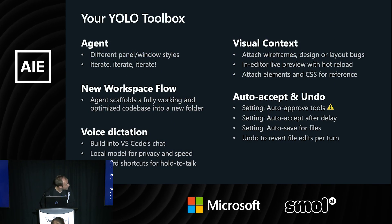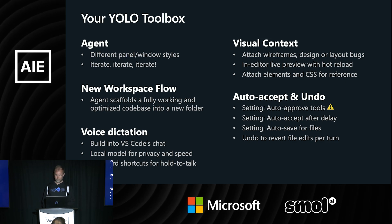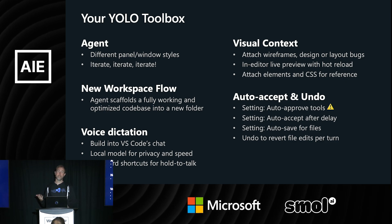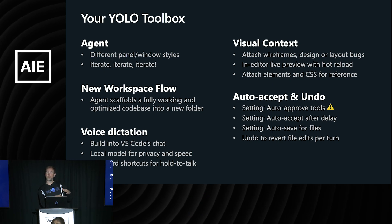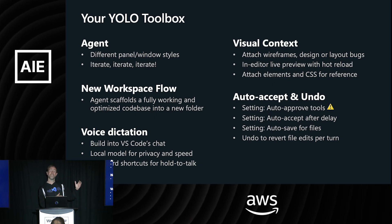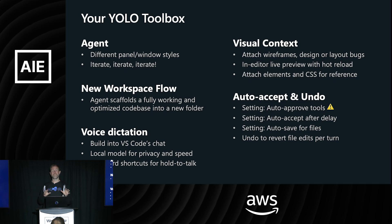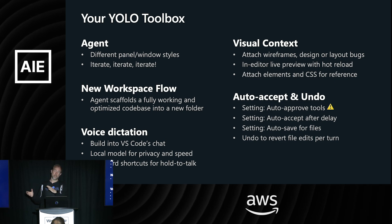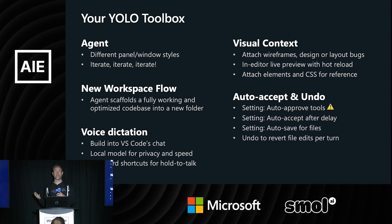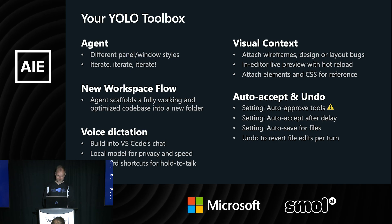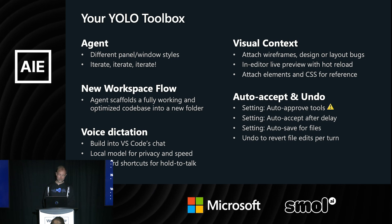I actually ran the same demo with different models. GPT-4.1 makes it look very wireframe-y. Gemini 2.5 Pro has an interesting design sense where it always looks somewhat different. And Claude Sonnet makes it always look like a blockchain landing page if you prompt it wrong — lots of gradients, dark, and big letters.